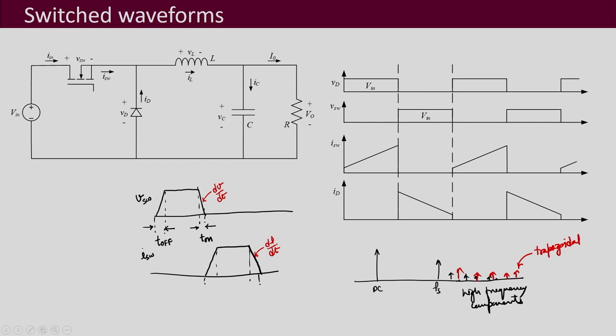For example, if you are changing from 500 V to 0 V as compared to when you are changing from 1 kV to 0 V, then a 1 kV converter handling those voltages may have higher EMI. Of course, it depends on many things, but that is one of the factors.